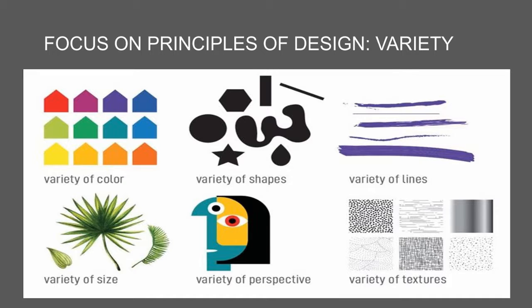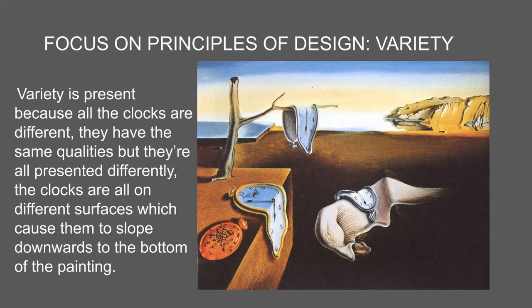Variety brings interest to the eye when looking at art. Variety can come in color, shape, line, size, perspective, and texture. How is the clock emphasized in this painting? How does variety make the artwork appealing to the eye?